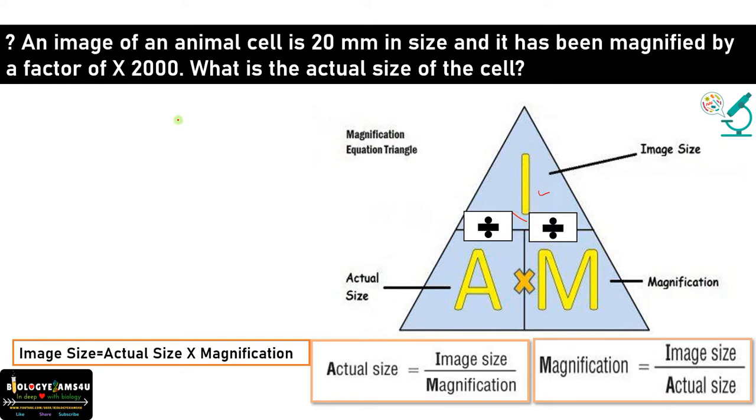Let us solve this question using this. Image size is given which is 20 millimeter. First point is most of the cell structures are given in micrometers so better to convert to micrometers. So millimeter to micrometer multiply by 1000. So it will be 20,000 micrometers. Then magnification is given which is 2000.